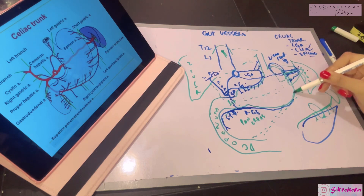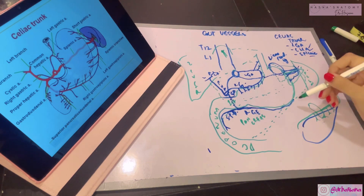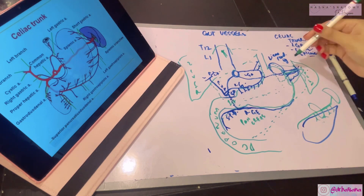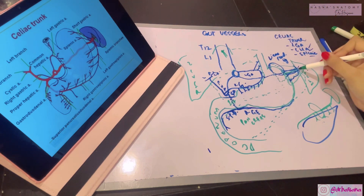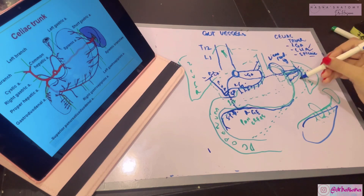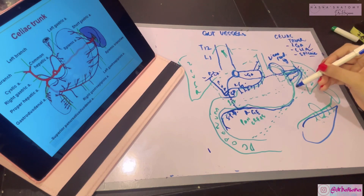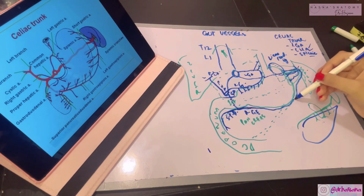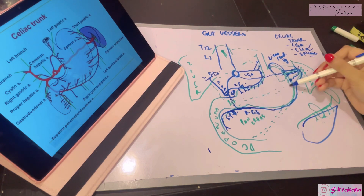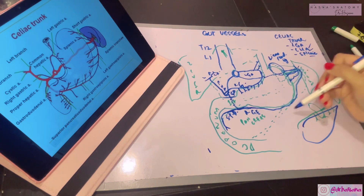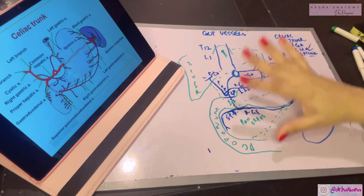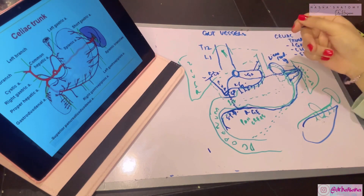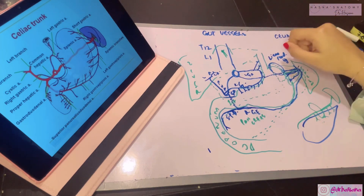The greater curvature still needs to be supplied and the right gastroepiploic artery needs a partner to anastomose with. So the terminal part of the splenic artery also gives the left gastroepiploic artery, which runs in the greater omentum and anastomoses with the right gastroepiploic artery, supplying the greater omentum and greater curvature of the stomach. Those were all the celiac trunk branches and their sub-branches. Join me in the next video where we'll discuss the superior mesenteric artery.